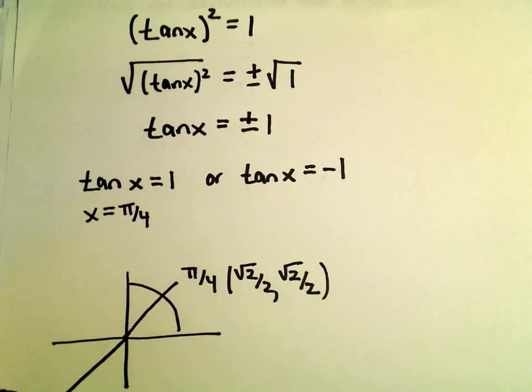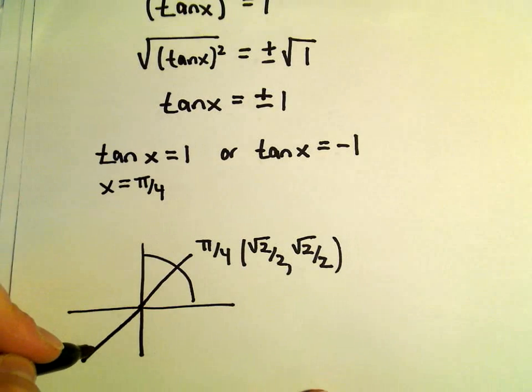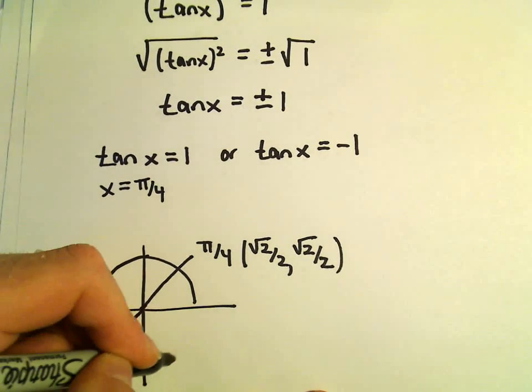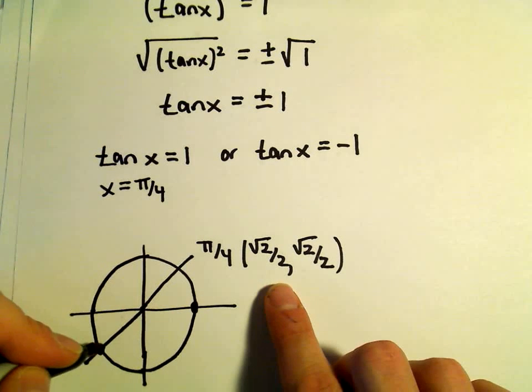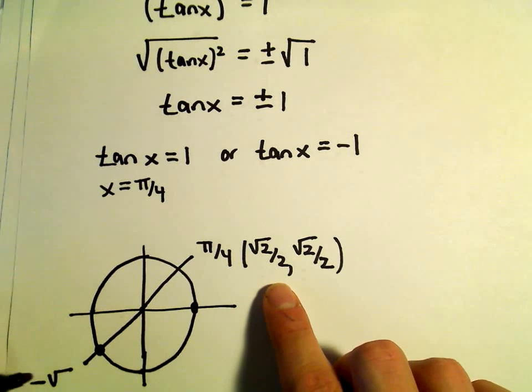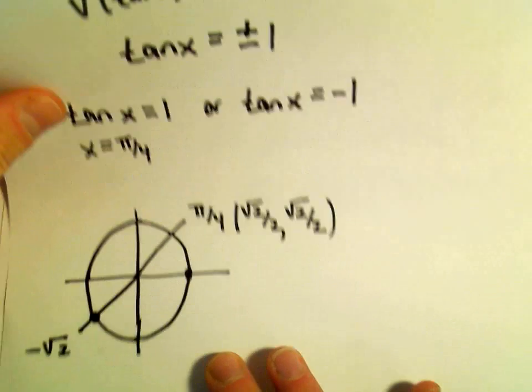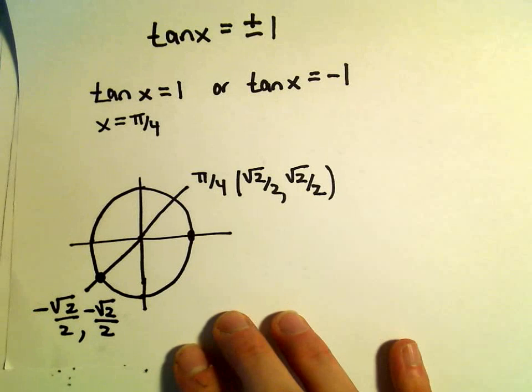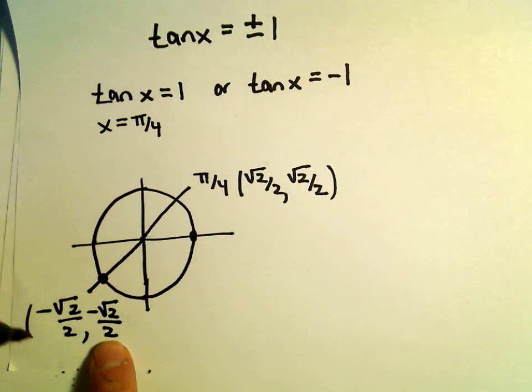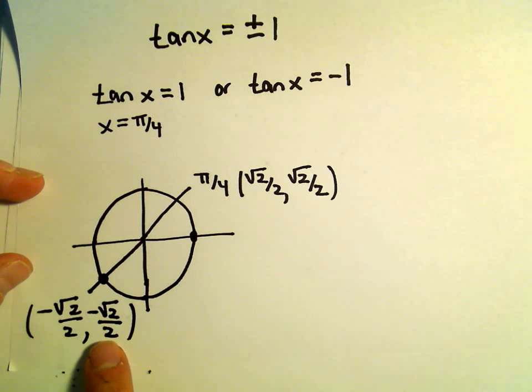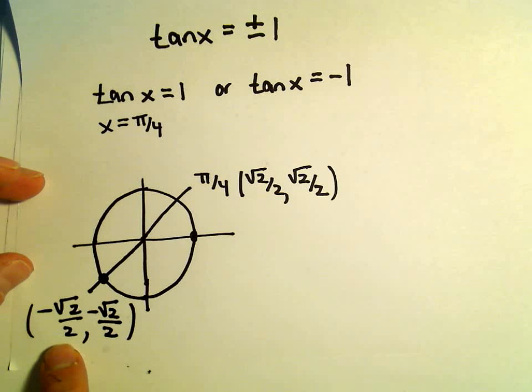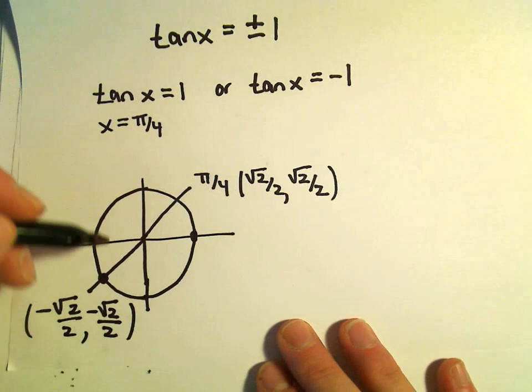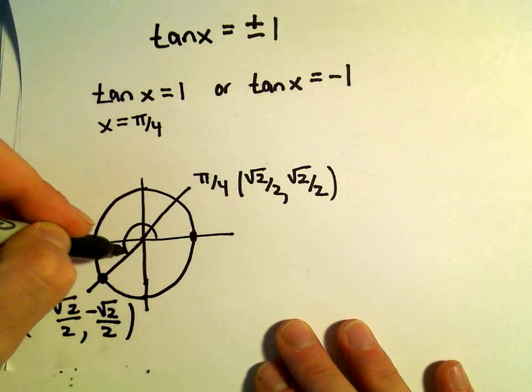Likewise, down in the third quadrant, that'll be another angle that works because there on the circle, now the x coordinate is going to be negative root 2 over 2. And the y coordinate is also going to be negative root 2 over 2. If we take that y coordinate, so sine of this angle over cosine of this angle, that'll be another solution because we'll get positive 1.